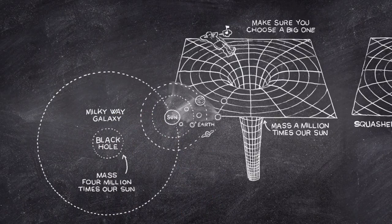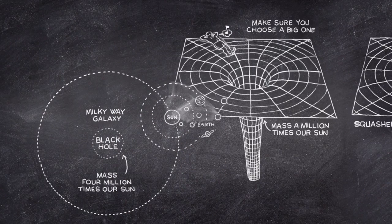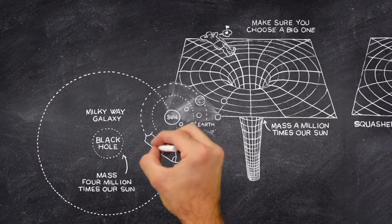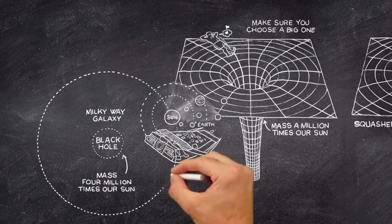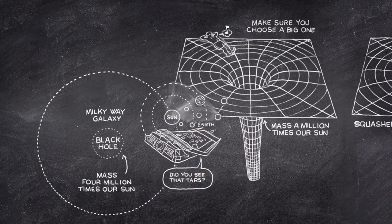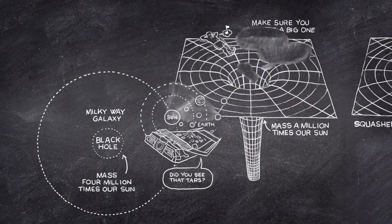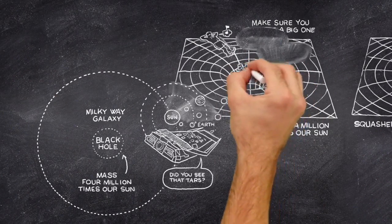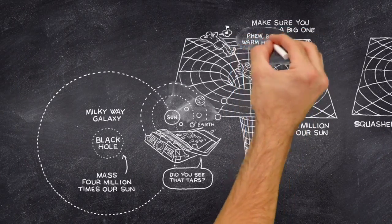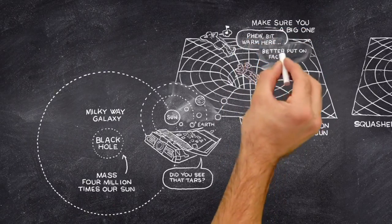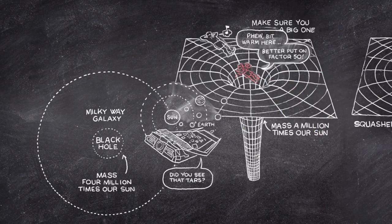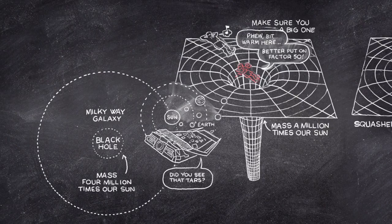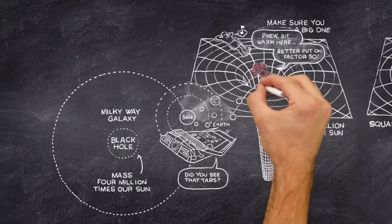Although you wouldn't notice anything particular as you fell into a black hole, someone watching you from a distance would never see you cross the event horizon. Instead, you would appear to slow down and hover just outside. Your image would get dimmer and dimmer, and redder and redder, until you were effectively lost from sight. As far as the outside world is concerned, you would be lost forever.